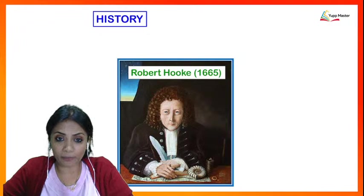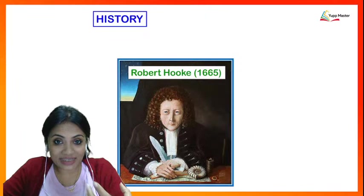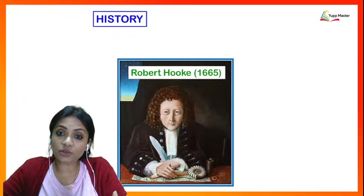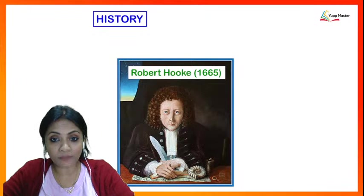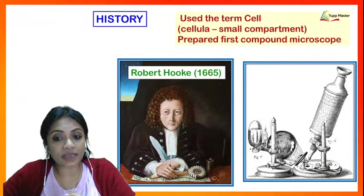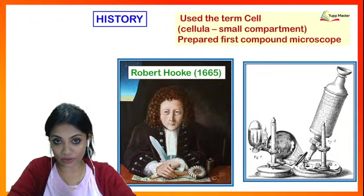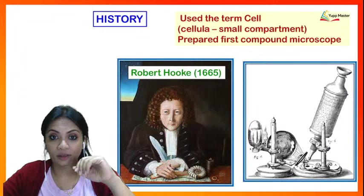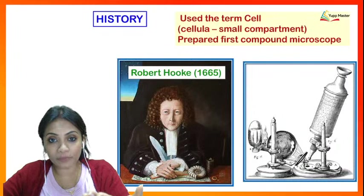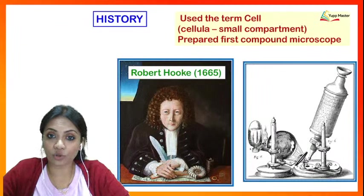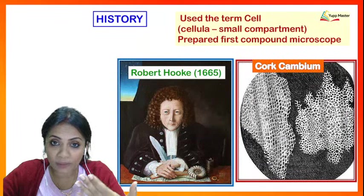Let's have a brief look at the history of the cell. How did the terminology of 'cell' come into existence? The first scientist is Robert Hooke. In the year 1665, he prepared the first compound microscope. He put a slide of cork — from the bark of a tree — inside the microscope to observe it. Under the microscope, the piece of cork looked like a honeycomb-like appearance.